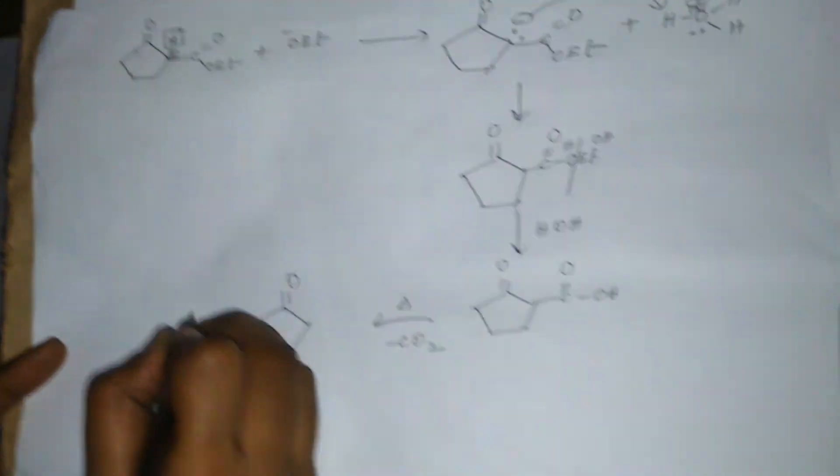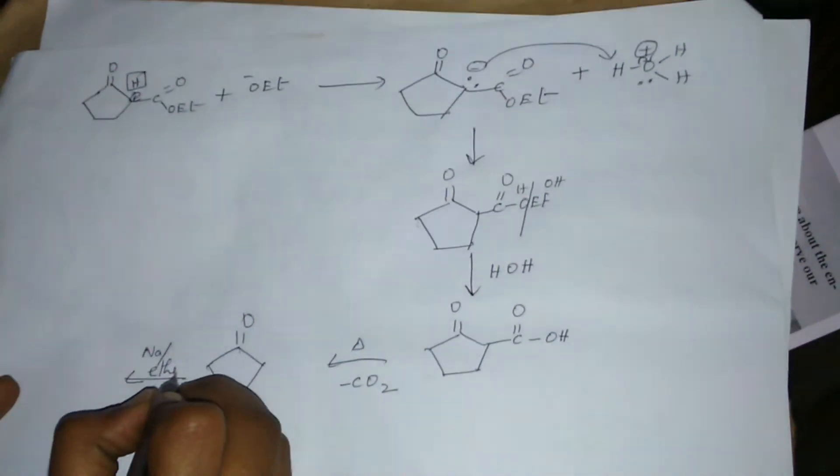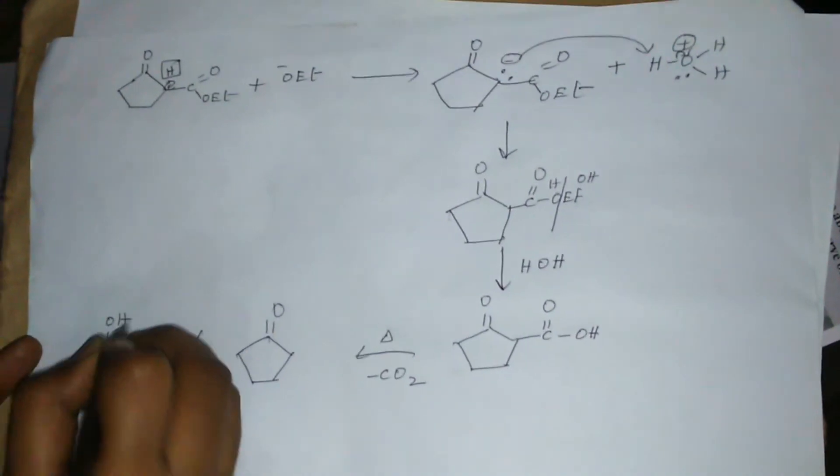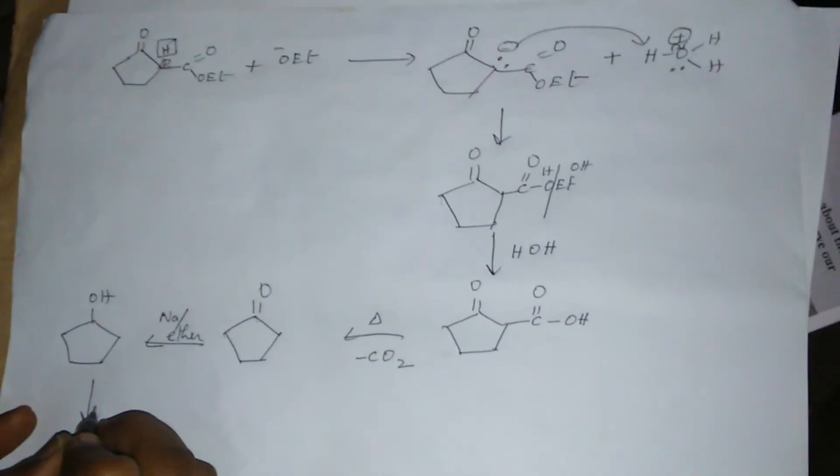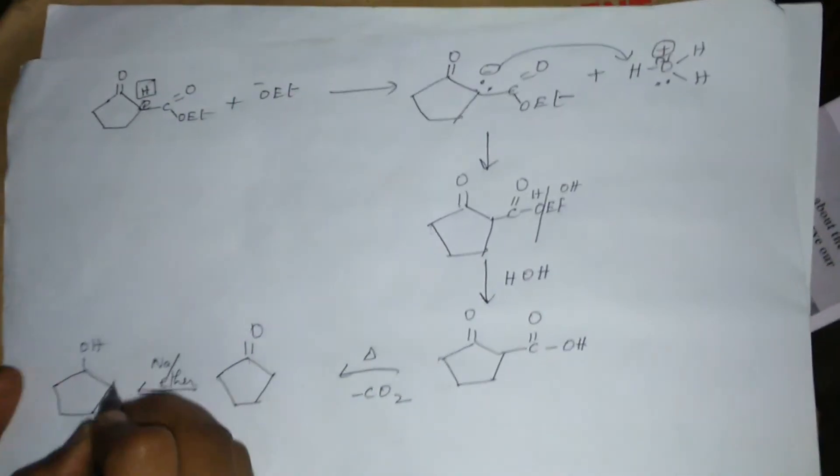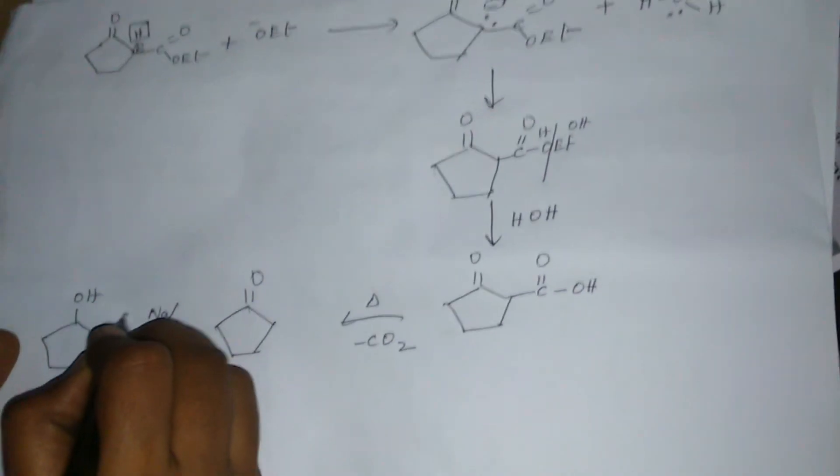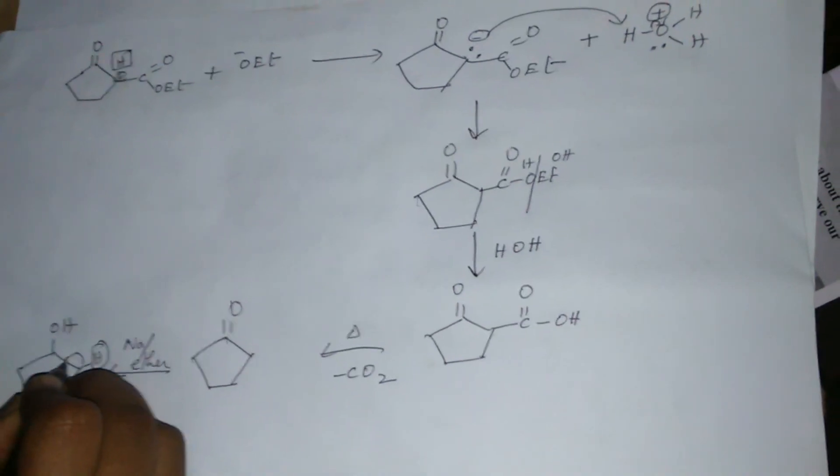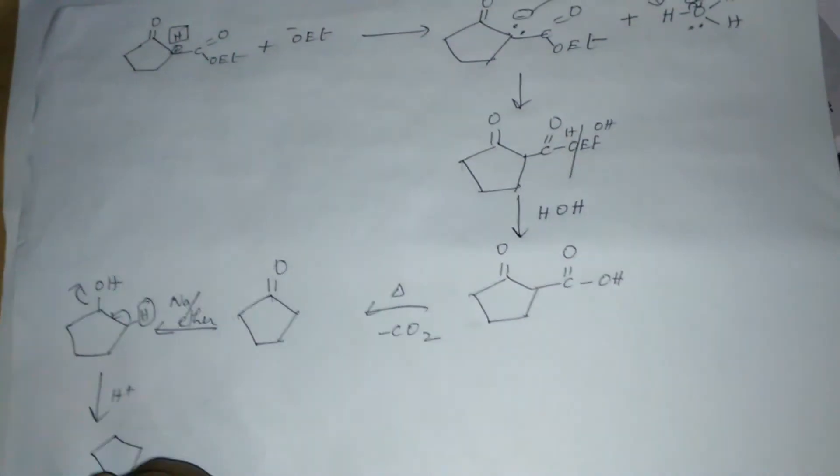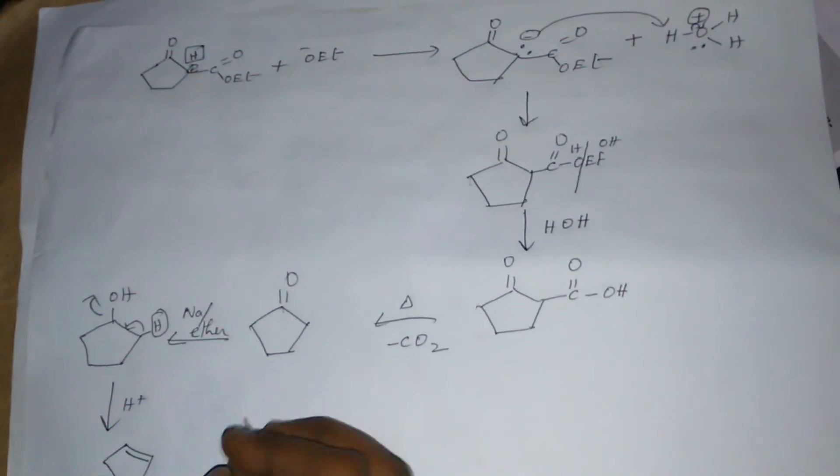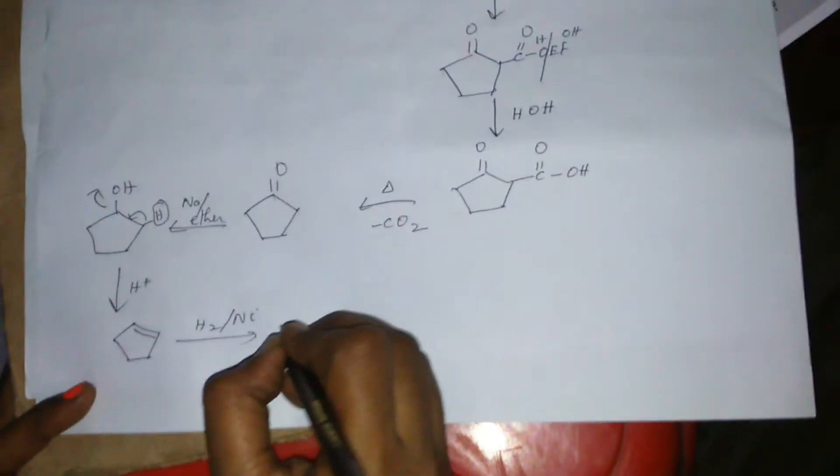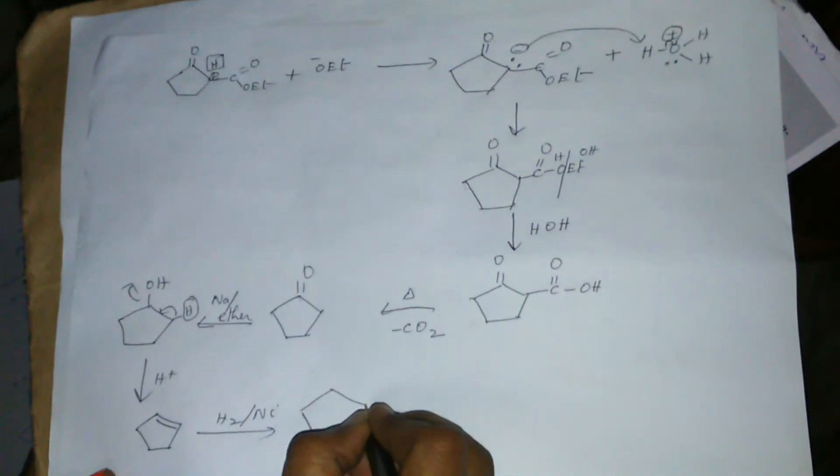This, on reduction with sodium and ether, becomes an alcohol. This, on dehydration in the presence of H+, becomes a cycloalkene. This, followed by reduction, becomes a cycloalkane.